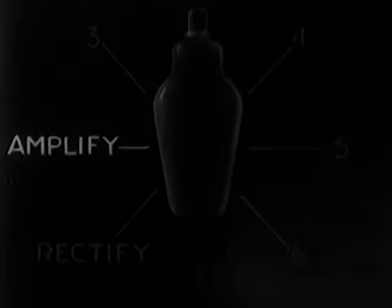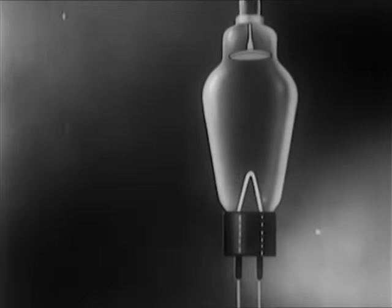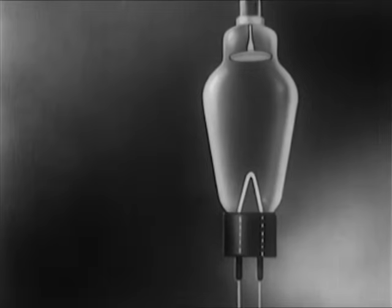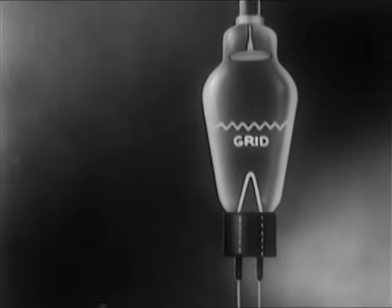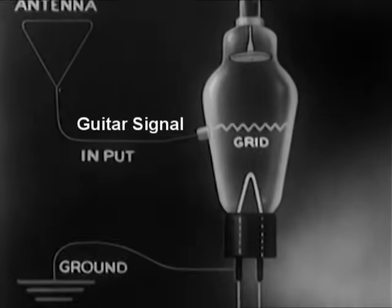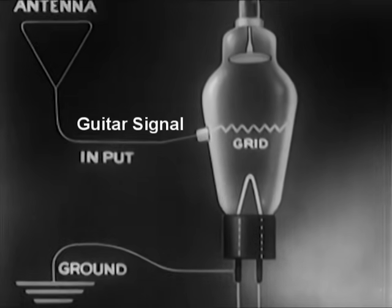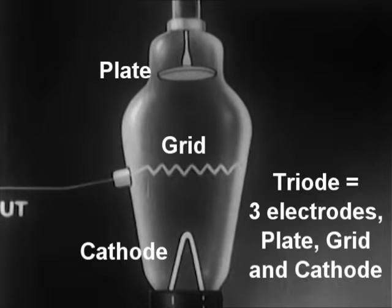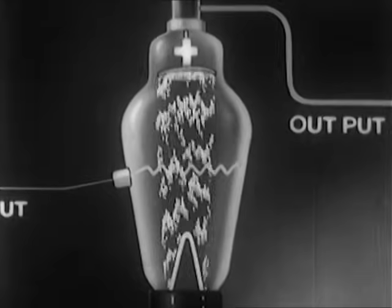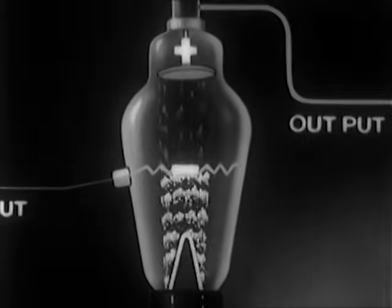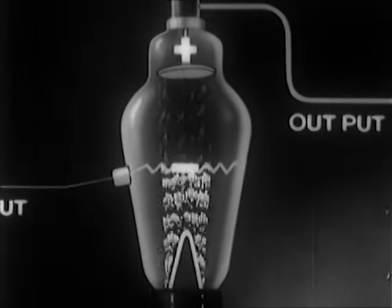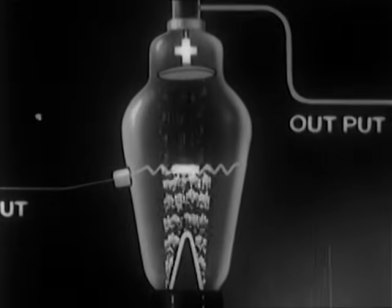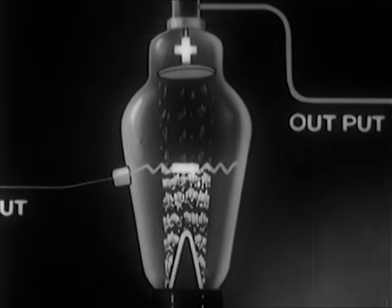Here's how. Between the cathode and the anode of the two-element tube, which we diagrammed a while ago, we now place a grid. To this grid, we connect an input of some weak voltage which we wish to amplify — perhaps that of a faint radio signal from halfway around the world. Every time a negative potential is impressed on the grid, even though it be very minute, it has a large effect in reducing the number of negatively charged electrons which would otherwise keep flying from cathode to anode.